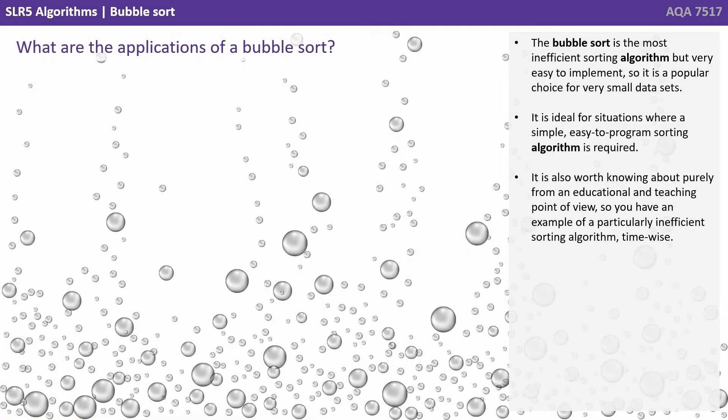The bubble sort is the most inefficient sorting algorithm but very easy to implement, so it's a popular choice for very small data sets. It is ideal for situations where a simple, easy-to-program sorting algorithm is required. It is also worth knowing about purely from an educational and teaching point of view, as an example of a particularly inefficient sorting algorithm time-wise.